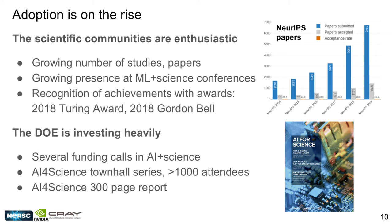Adoption of deep learning is on the rise in scientific communities. More papers are being published every day on science applications of deep learning. There is a growing presence at conferences like NeurIPS, where paper submissions and attendance are soaring, and also in domain science conferences with dedicated machine learning tracks. Achievements have been recognized with awards like the Turing Award and Gordon Bell Prize. The Department of Energy and other funding agencies are investing heavily in AI, and last year's AI for science town hall series had over a thousand attendees, culminating in a 300-page report on AI for science.